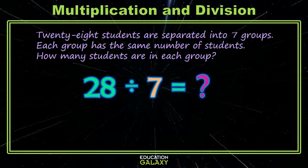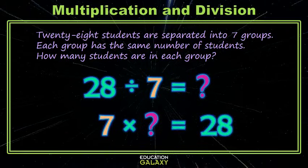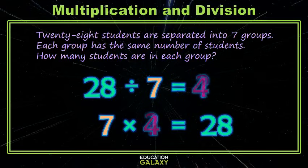Well, if we know that 28 divided by 7 equals that number, then 7 times that number equals 28. So again, one of your favorite multiplication facts: 4. There are 4 students in each group.